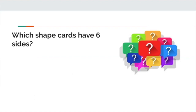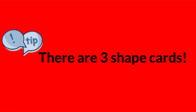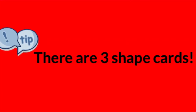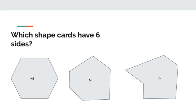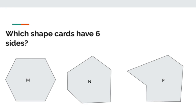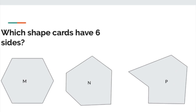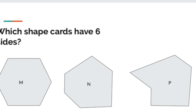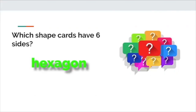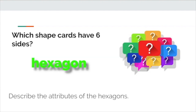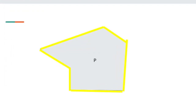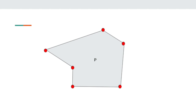Now I want you to take a look at the rest of your shape cards and figure out which ones have six sides. Press play when you're ready. If you found shape cards N and P, you found all the shape cards that have six sides. In math we call them a hexagon. Will you say that with me? Hexagon. If you said that a hexagon has six sides, six angles, and six vertices, you are correct.